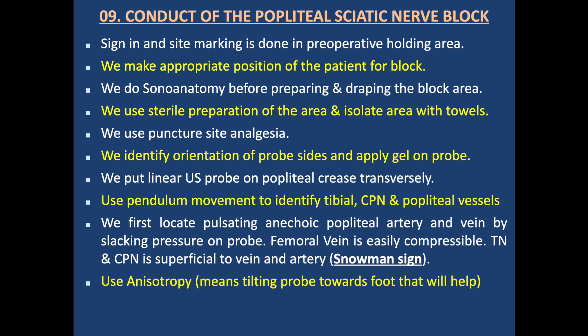Conduct of the popliteal sciatic nerve block: Sign-in and site marking are done in the preoperative holding area. We make the appropriate position for the patient for the block. We perform sonoanatomy before preparing and draping the block area. We use sterile preparation of the area and isolate it with towels. We use puncture site analgesia and identify orientation of probe and needle. We apply gel on the probe and put the linear ultrasound probe on the popliteal crease transversely. We use pendulum movement up and down to identify the tibial nerve, common peroneal nerve, sciatic nerve, and popliteal vessels. We first locate the pulsating and echogenic popliteal artery and vein by applying pressure on the probe.